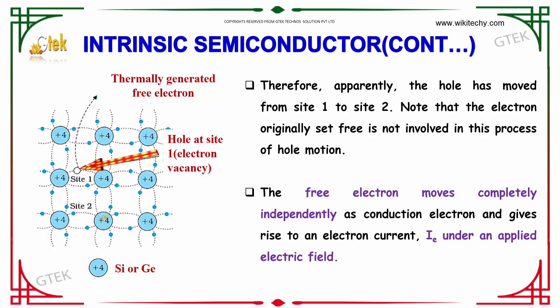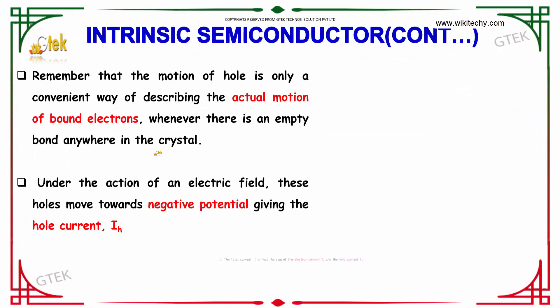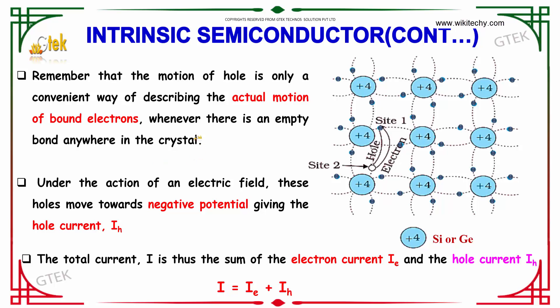The free electron moves completely and independently as a conduction electron and gives rise to an electron current IE under an applied electric field. Remember that the motion of a hole is only a convenient way of describing the actual motion of bounded electrons whenever there is an empty bond anywhere in the crystal. Under the action of an electric field, these holes move towards the negative potential, giving the hole current IH. The total current I is the sum of the electron current IE and the hole current IH.